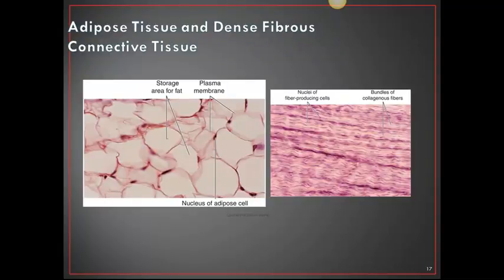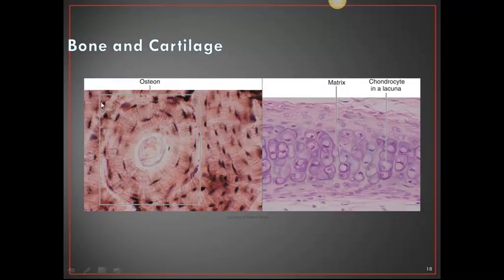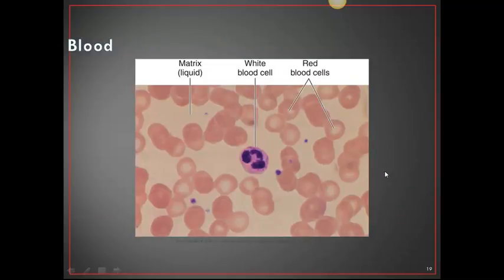Here are pictures of connective tissue types. Fat cells show large storage spaces. Fibrous connective tissue is normally white but is stained here for visibility. Bone shows the osteon structure. Cartilage shows the matrix with chondrocytes located within. Blood is shown as a human blood smear: white blood cells appear purplish when stained, red blood cells are much smaller, and the liquid matrix in the background is the plasma.